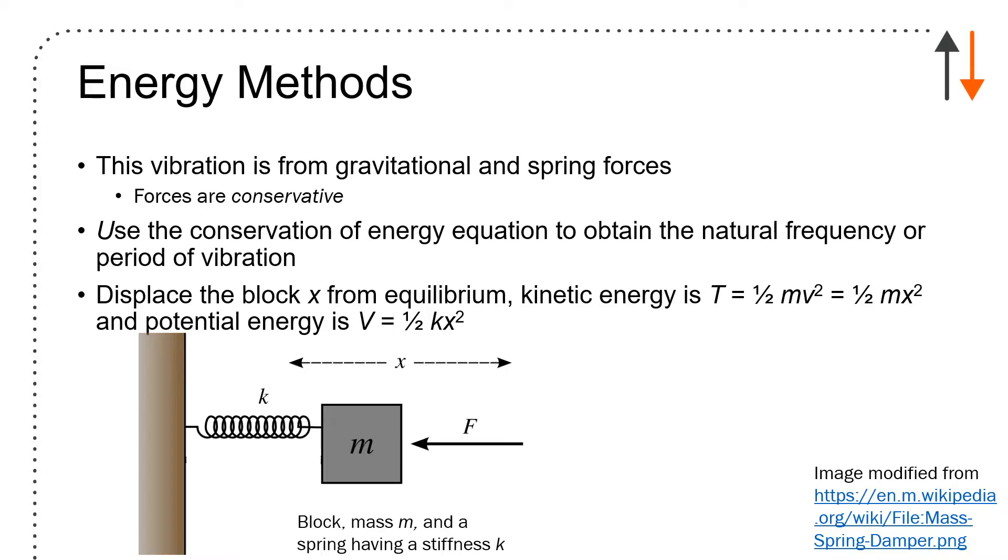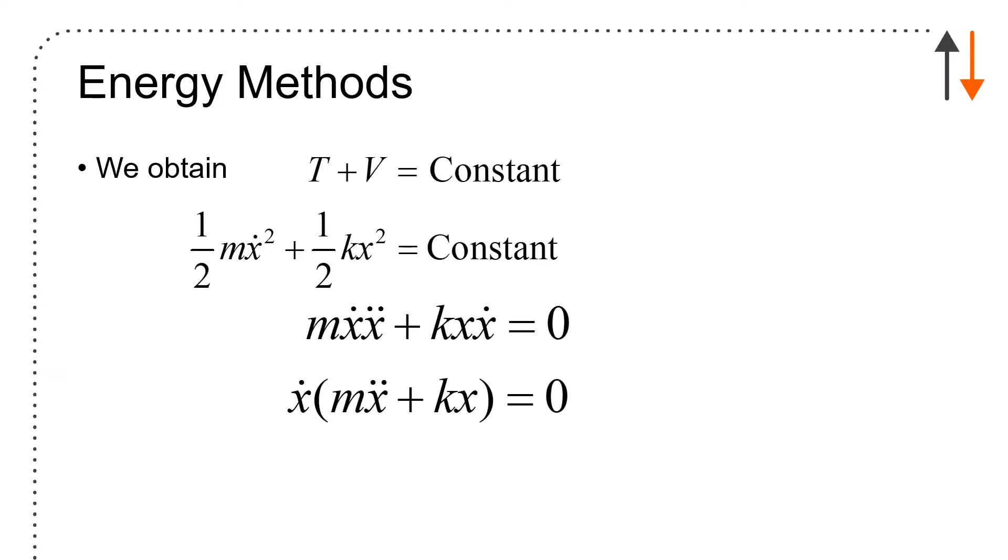Energy methods: vibrations from gravitational spring forces are conservative, and you can use conservation terms. Displacement is at a constant energy level where kinetic energy T = (1/2)mv² = (1/2)mx_dot², and potential energy V = (1/2)kx². If you put all the terms together, T + V = constant, and you end up with the same expression as before.